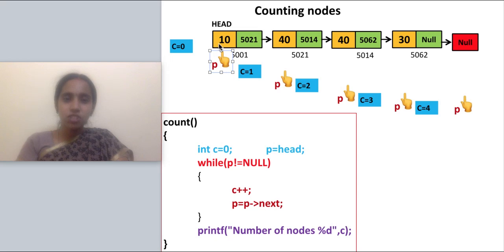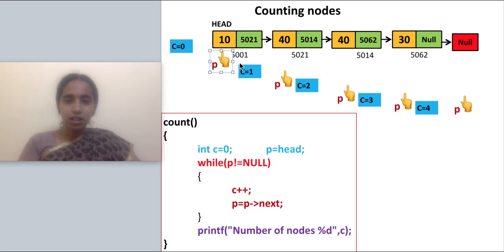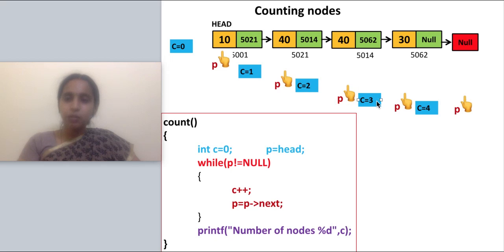I will have a pointer variable which starts at the linked list. The linked list always starts with the head variable, so the head variable points to the start of the list. The pointer variable p will point to head. Once it is pointing, I will increment the count, then move p to the next node, increment the count again, and move p to the next node — repeating this process.